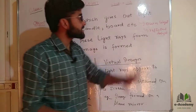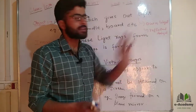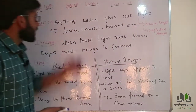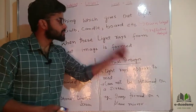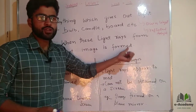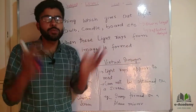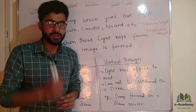Whether this light is its own light or the reflected light. For example, we have a bulb, a candle, we have this board. This board reflects the light, so this board is treated as an object.